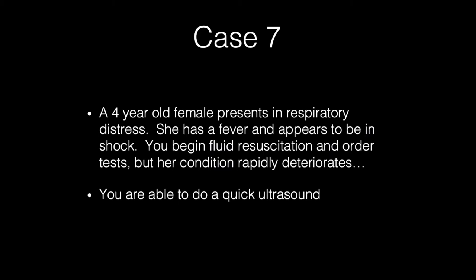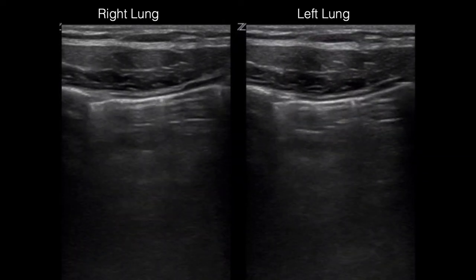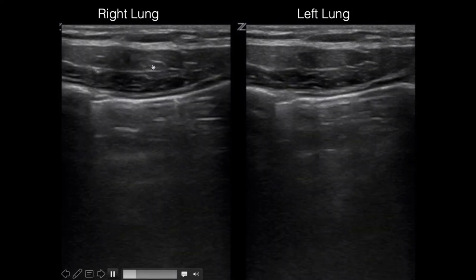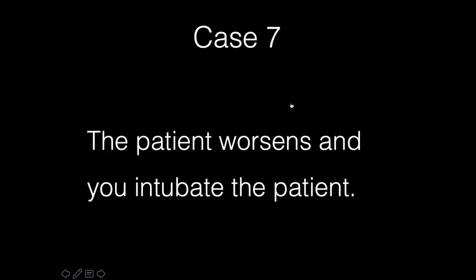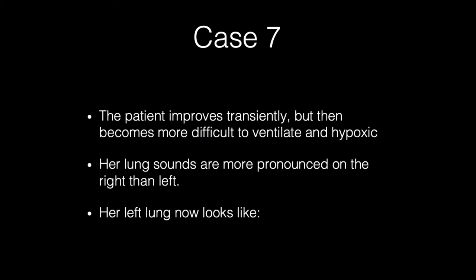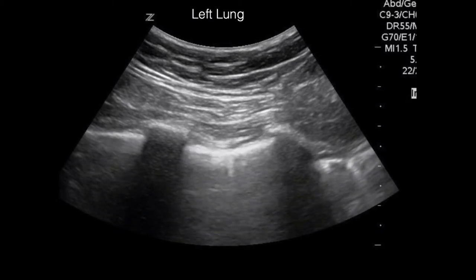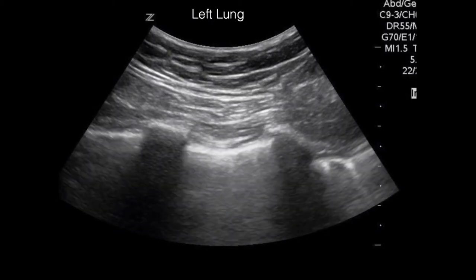Case seven: a four-year-old female presents in respiratory distress with fever, appearing to be in shock. Fluid resuscitation is begun but her condition rapidly deteriorates, requiring intubation. A quick ultrasound of the right and left lung using linear array shows the pleural line with sliding and comet tails bilaterally. The patient improves transiently after intubation but then becomes more difficult to ventilate and hypoxic. Lung sounds are more pronounced on the right than the left.